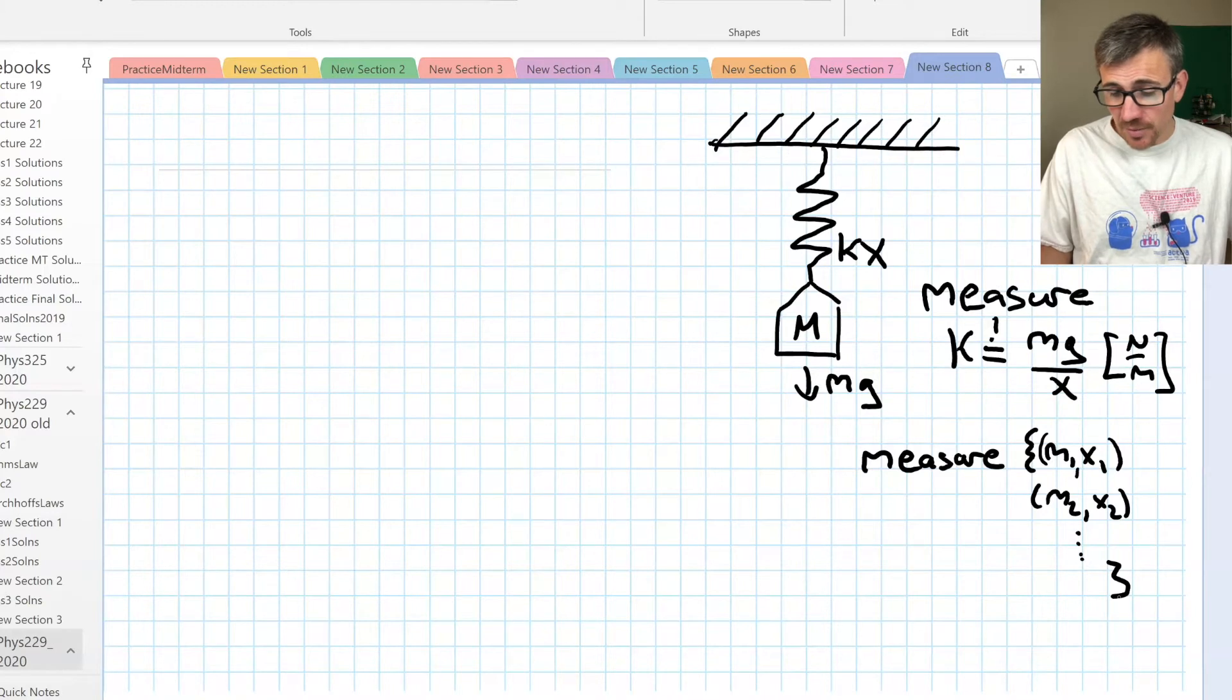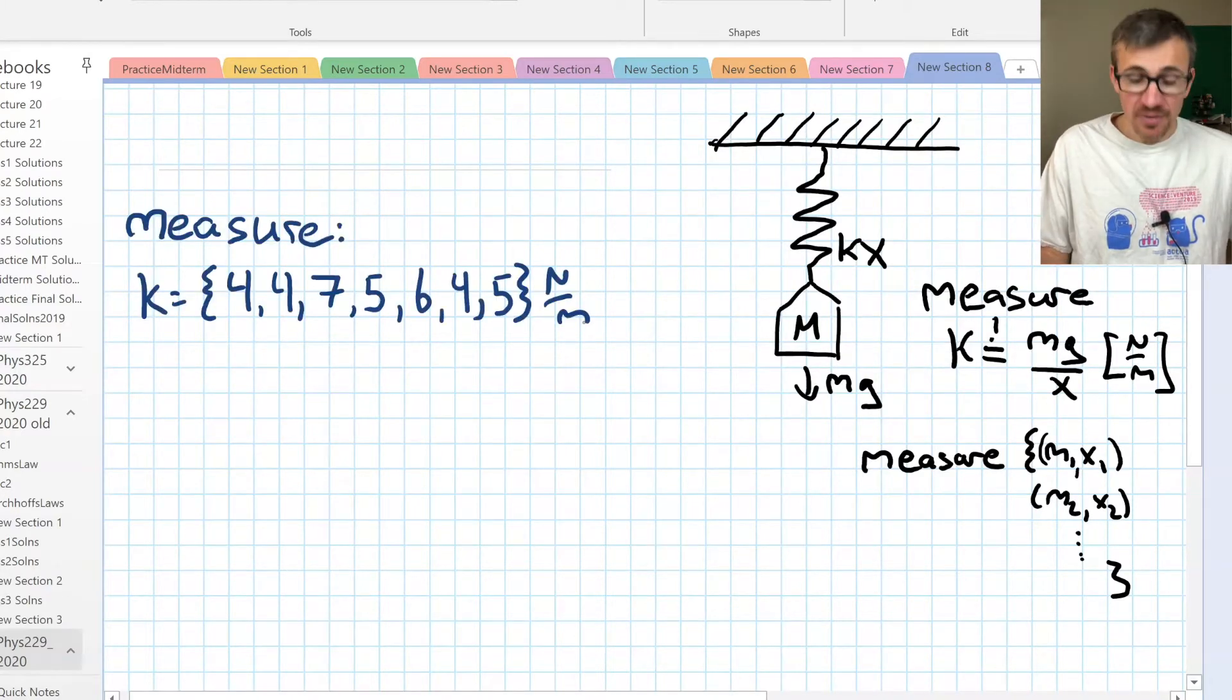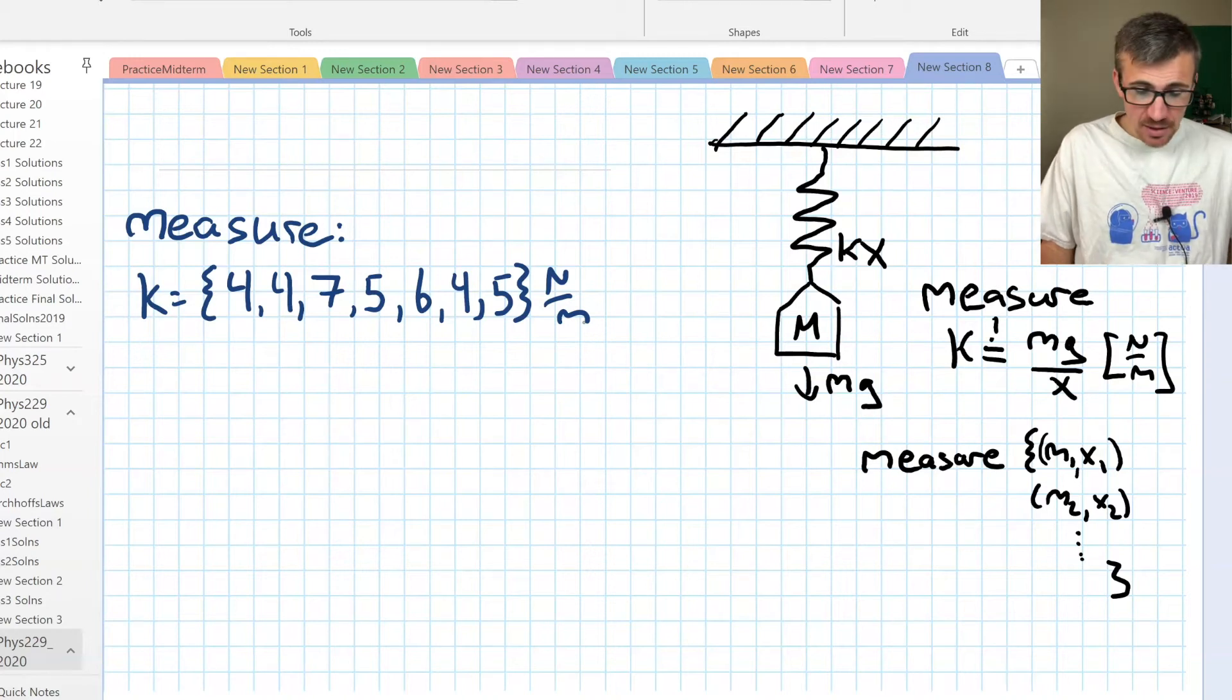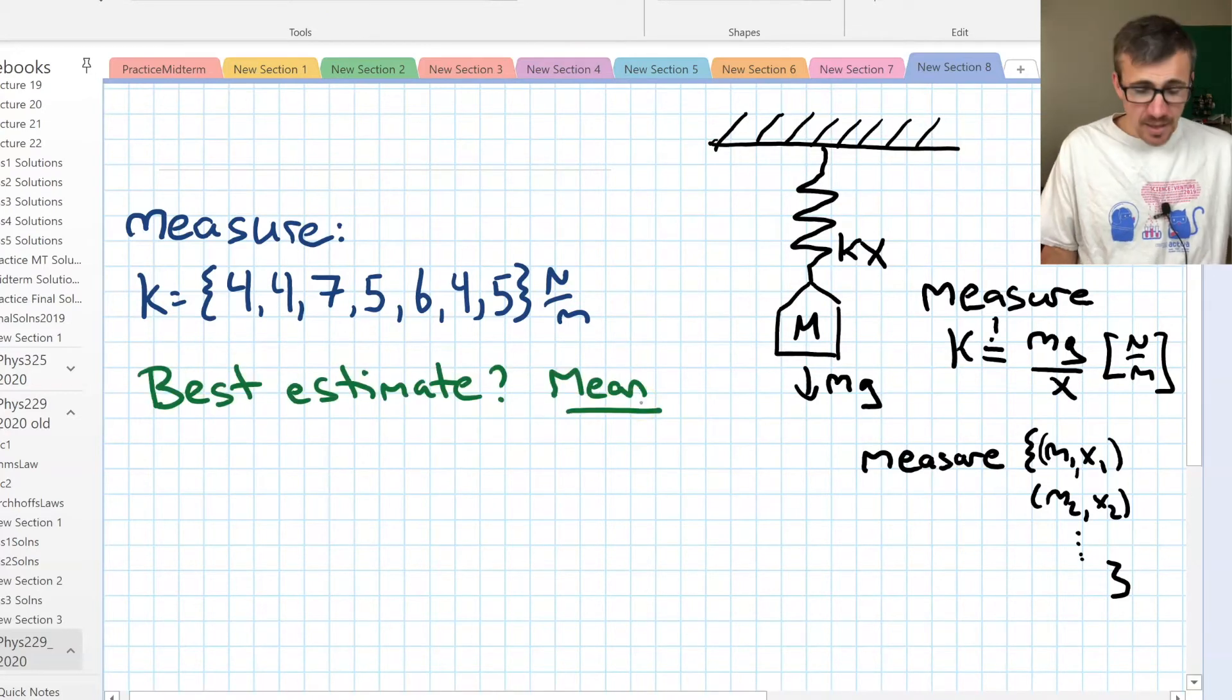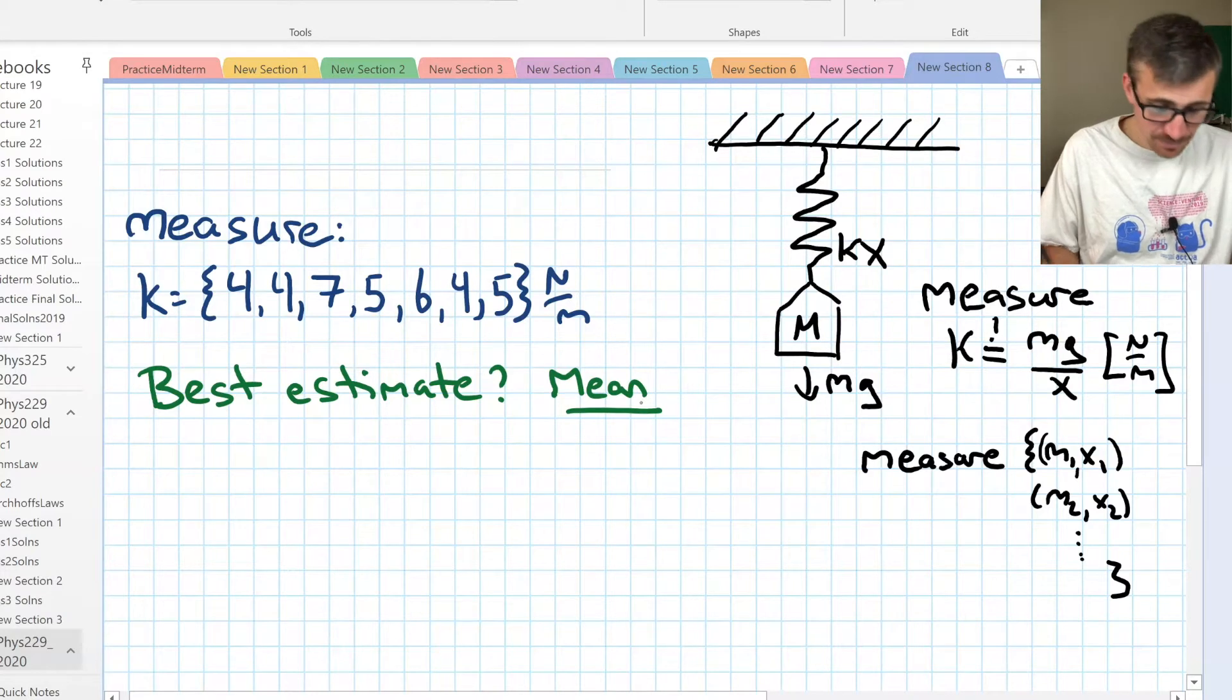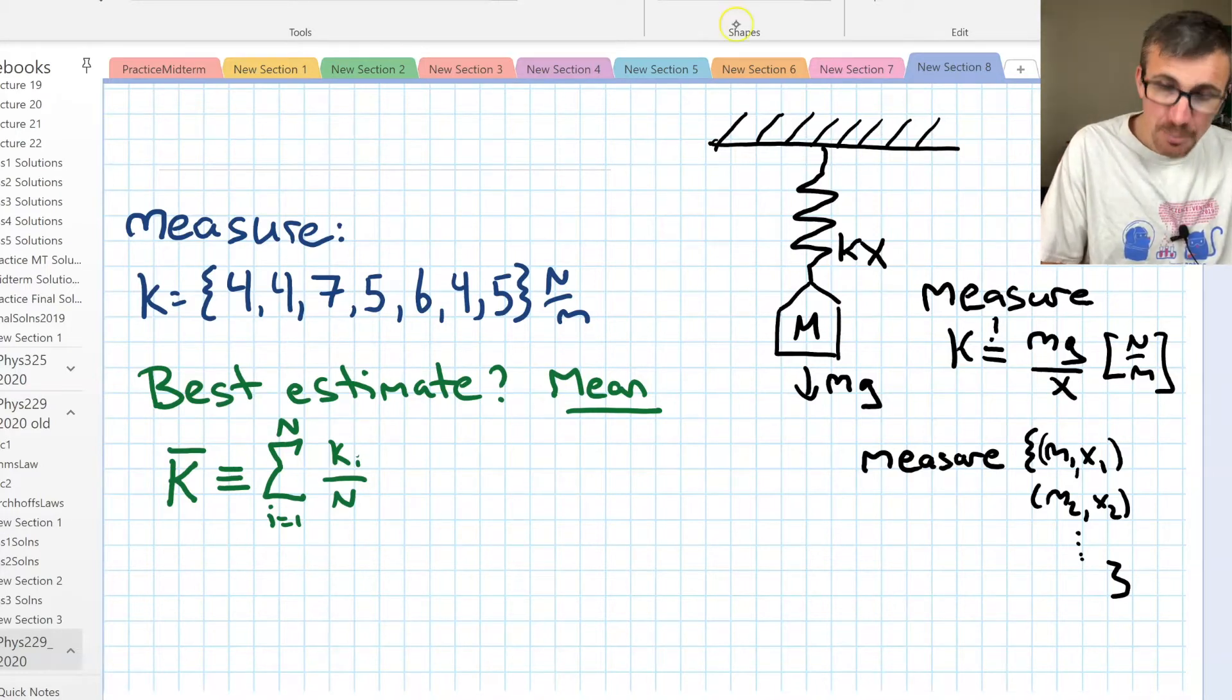So first of all, what is the best estimate for K? Let's pretend we made some measurements. We measured 4, 4, 7, 5, 6, 4, 5 for this ratio here, and the units were always newtons per meter. So what is our best estimate of K? Well, the best estimate is something you're probably familiar with, the average or the mean. For this case, what is our definition of the mean? It's just the sum of all the elements divided by the number of elements. The mean is defined as the sum of all these elements divided by n. We'll put a box around that one.